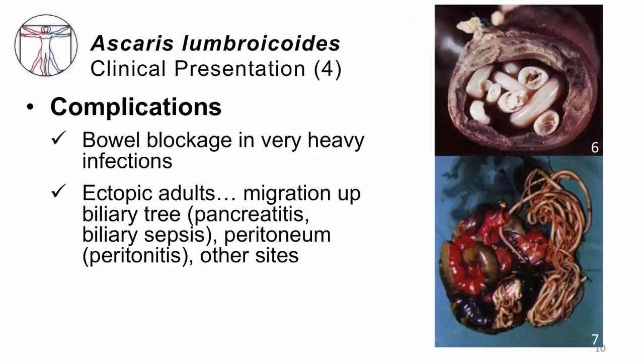The real problem with Ascaris isn't that — the problem is that it may cause complications. Complications include bowel blockage: in the upper panel, you can see someone whose small bowel is absolutely packed with worms, making it hard for food and stool to pass. These worms can also go where they don't belong. If a worm encounters the sphincter of Oddi, it may crawl right up into the biliary tree, causing blockage of biliary flow and leading to biliary sepsis. Sometimes they make their way right out of the intestines into the peritoneal cavity, dragging fecal coliform bacteria with them — that's peritonitis. They can go elsewhere in the body as well.